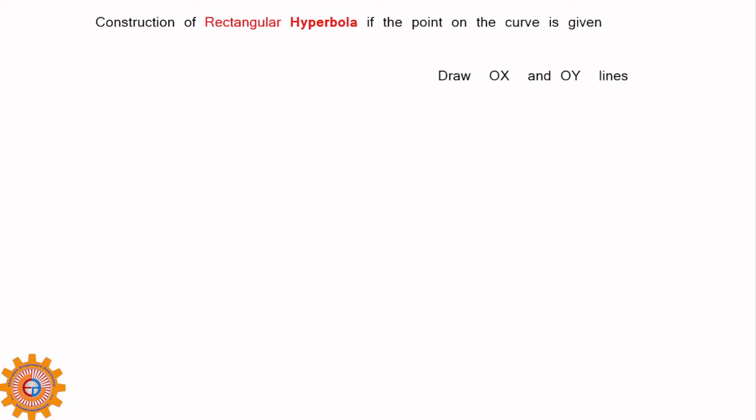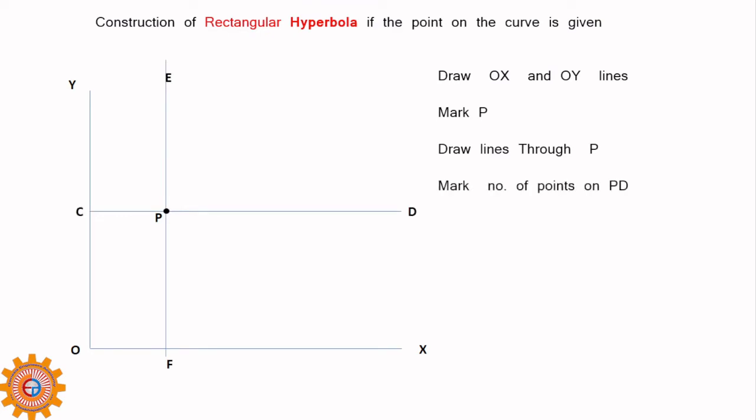Draw OX and OY as in the case of graph we use OX and OY, O is the origin. From the origin you have to draw horizontal line OX and vertical line OY and you have to locate the point P as per the data given and you have to draw one horizontal line through that point and also one vertical line through point P. So we got that P. Mark number of points on the PD as much as you can. Minimum must be at least 4 or 5. I have taken 5 points.